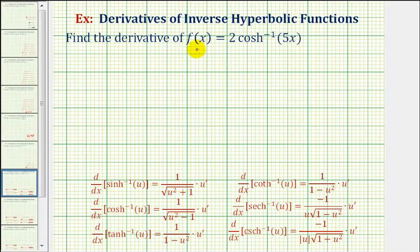We want to find the derivative of f of x equals two inverse hyperbolic cosine of five x.